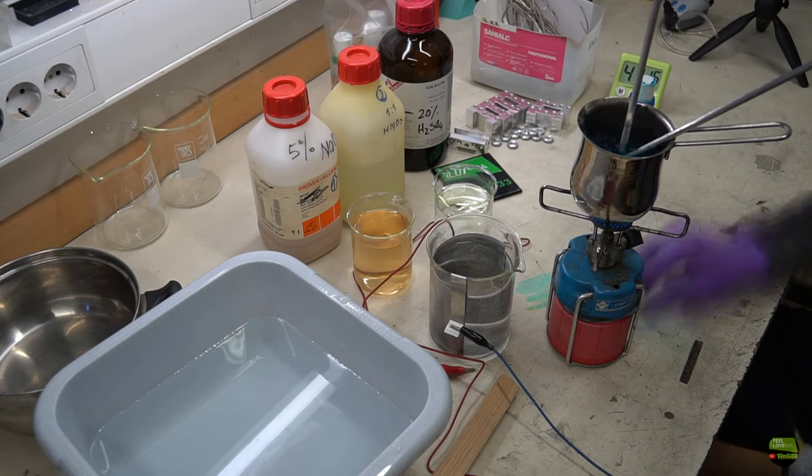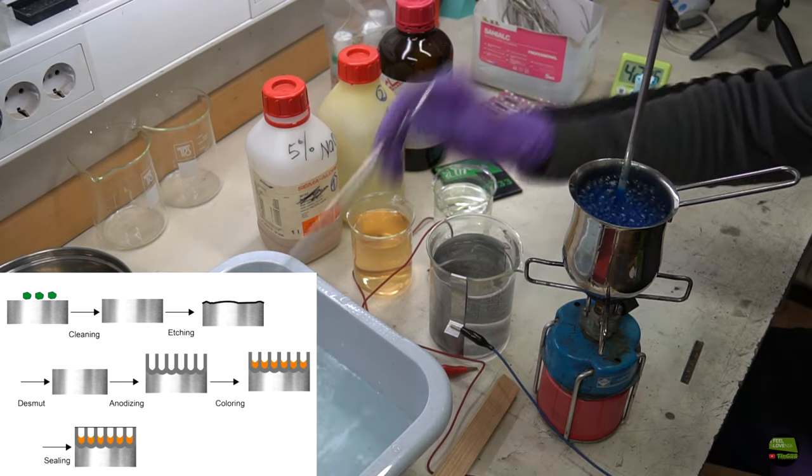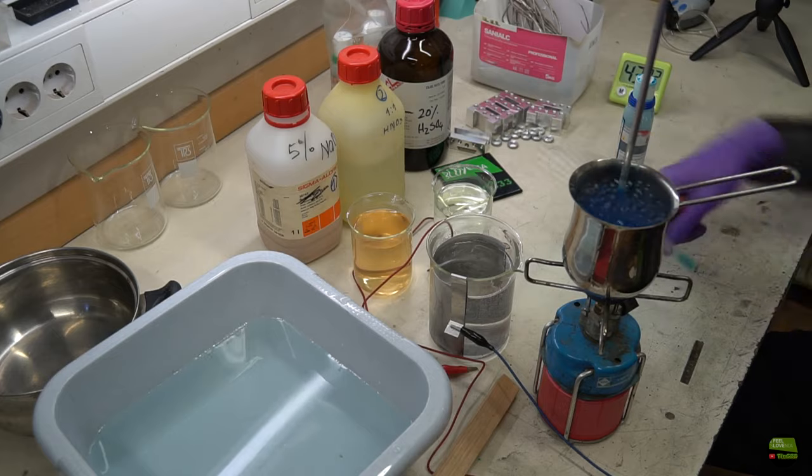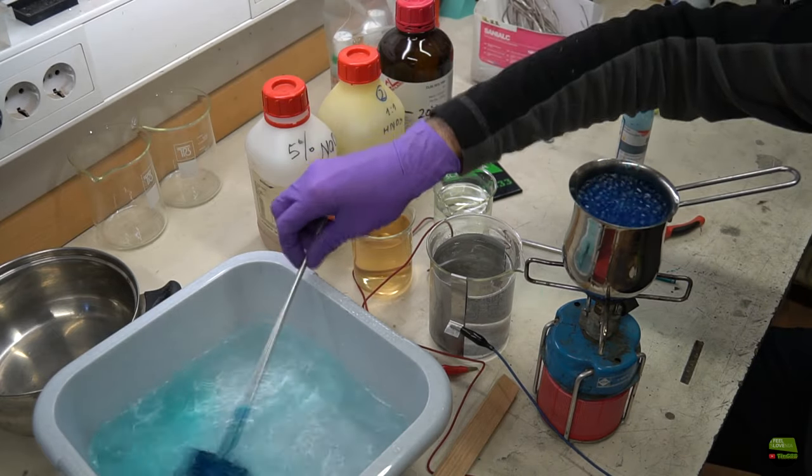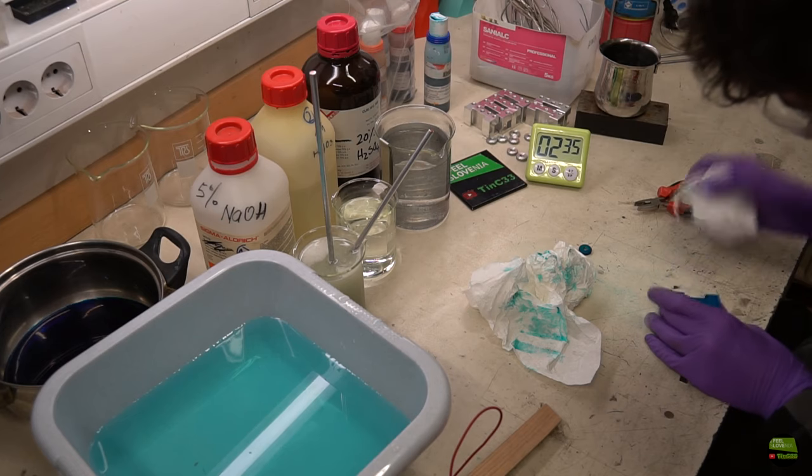With anodizing we make tiny holes on the surface of aluminum. In the coloring step, color pigment gets stuck into those holes. And with sealing, which is simply cooking the part in boiling water, we close those holes back. So the holes will close and catch the color pigment inside, and the part gets its shine back. That's it.